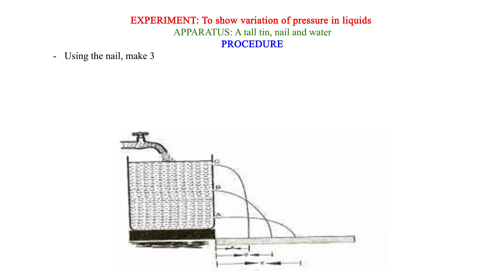Experiment to show variation of pressure in liquids. Apparatus: a tall tin, nail and water. Procedure: Using the nail, make three holes A, B, C of the same diameter on a vertical line of one side of the tin. Fill the tin with water as shown below.